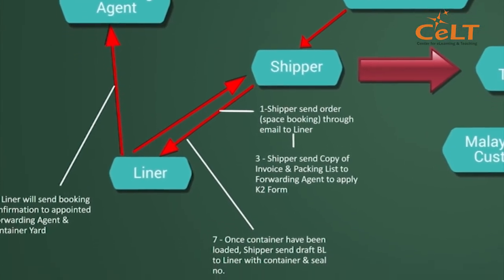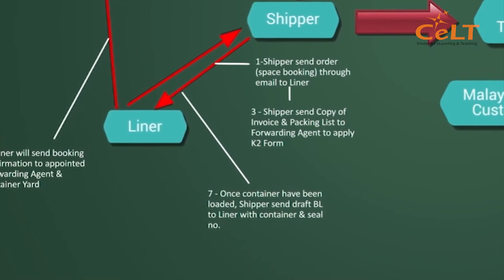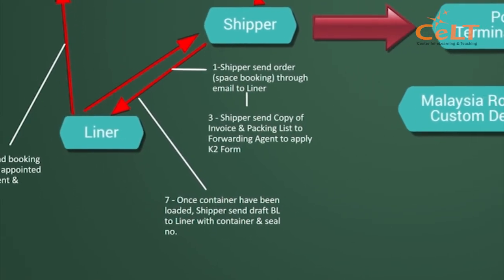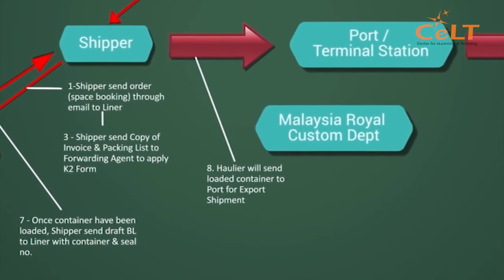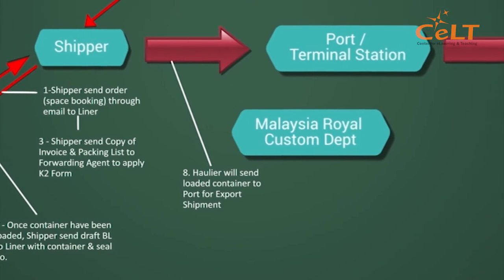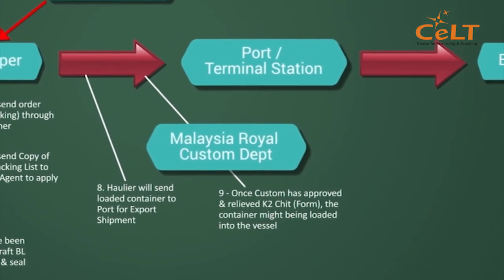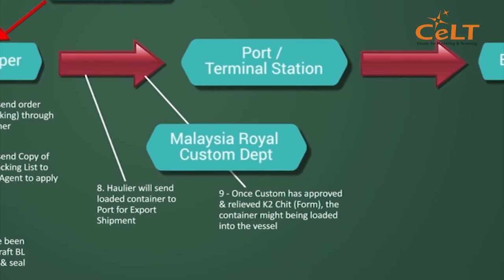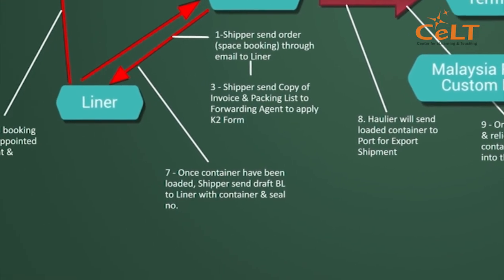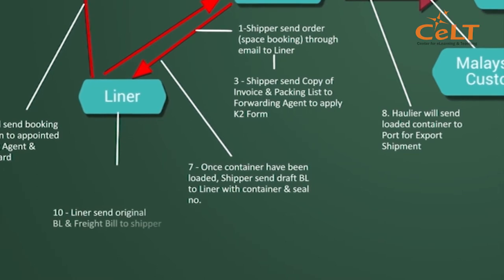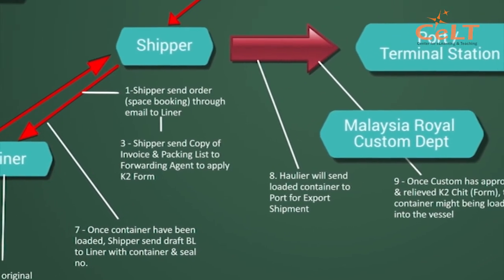Step 7: Once container has been loaded, shipper then drafts Bill of Lading (BL) to liner with container and seal number. Step 8: Haulier will send loaded container to port for export shipment. Step 9: Once custom has approved and released K2 form, the container may be loaded into vessel. Step 10: Liner sends original BL and freight bill to shipper.